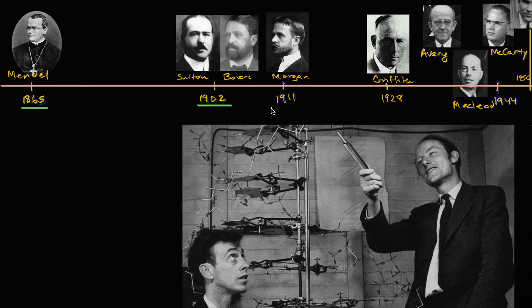Then we start having a lot more evidence for this. Morgan is able to show that a mutant eye color trait seems to be passed on in a way that shows that it is on the X sex chromosome. Him and his team started doing a lot more work, especially with fruit flies, to show that chromosomes are the basis for where these heritable factors are.